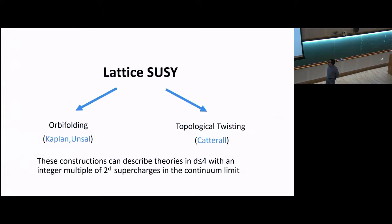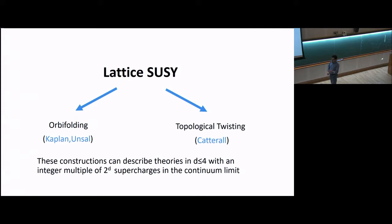Broadly speaking, there are two approaches to formulating supersymmetry on a lattice that we heard about earlier this week. One comes from orbifolding matrix models. Another one comes from topologically twisting and then performing a geometric discretization. These constructions can describe theories in dimension d less than or equal to 4, which have an integer multiple of 2^d supercharges in the continuum limit. In four dimensions, the only theory you can reach is one with 16 supercharges — notably with maximal supersymmetry. In three dimensions, you can have eight supercharges or 16 supercharges, and in lower dimensions there are even more possibilities.